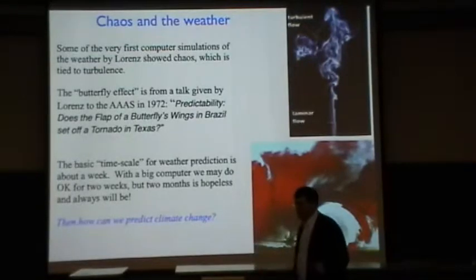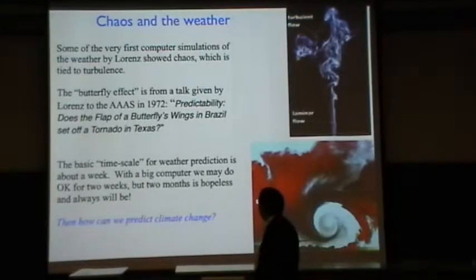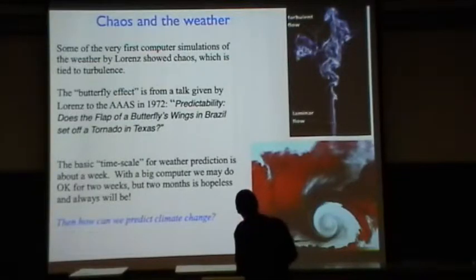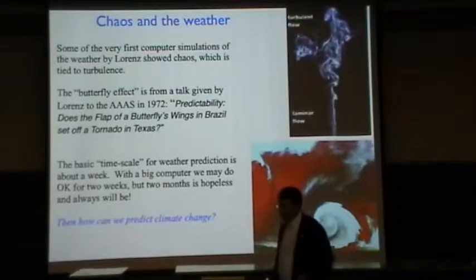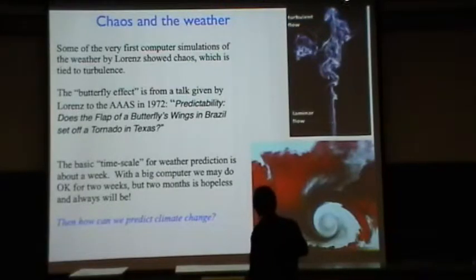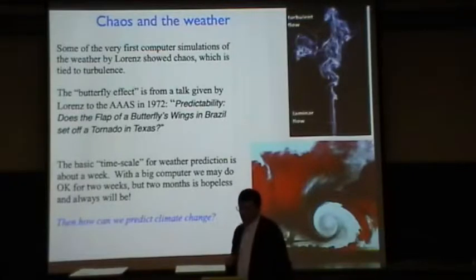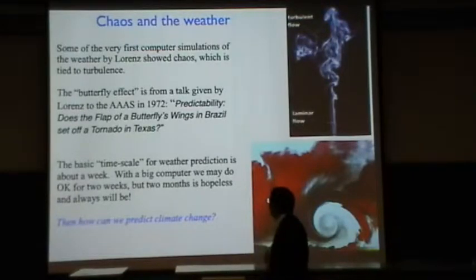This happens in the simulation of the weather. The chaos for fluids, liquids, and gases is called turbulence. Here's an example. This is just a picture of cigarette smoke. Here it's sitting in a regime where it's not chaotic. Once you're in a chaotic regime, it's making all sorts of little eddies and swirls and patterns that are very hard to predict in detail. So that's turbulent flow here. Some of the very first computer simulations of the weather by Edward Lorenz showed chaos, which is a type of turbulence. He found that he could just make tiny changes in his input to the weather simulation and he got completely different results.